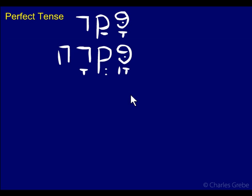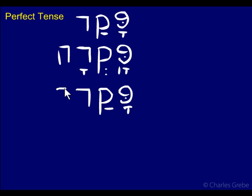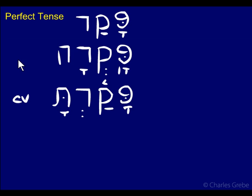Now we've finished third person and we're on to second person: second person masculine singular. The ending for 2MS is -ta. This is a CV ending — it does not pull the stress over. So this one's really simple: you just take the 3MS form and tack on the ending -ta. You don't change anything inside the root. So: paqad-ta.